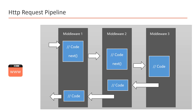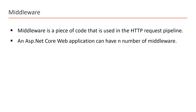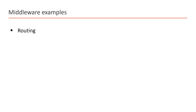A middleware is a piece of code used in the HTTP request pipeline. An ASP.NET Core web application can have any number of middlewares, which we insert based on the application's functionality. There are pre-built middlewares available that we can use, or we can create custom middleware. Importantly, the order of middleware matters a lot — the request will travel through each middleware in the same order they were inserted in the pipeline.